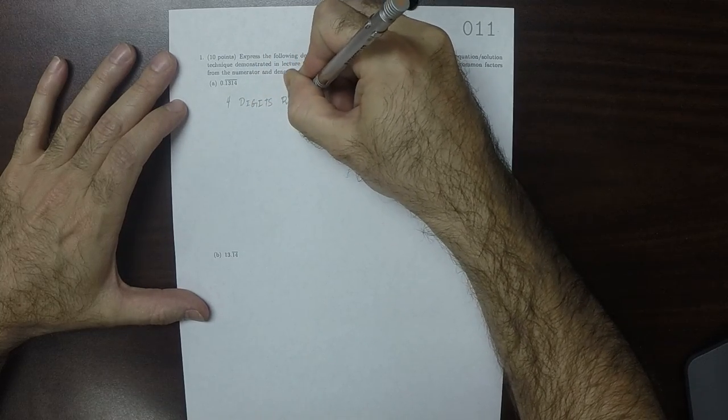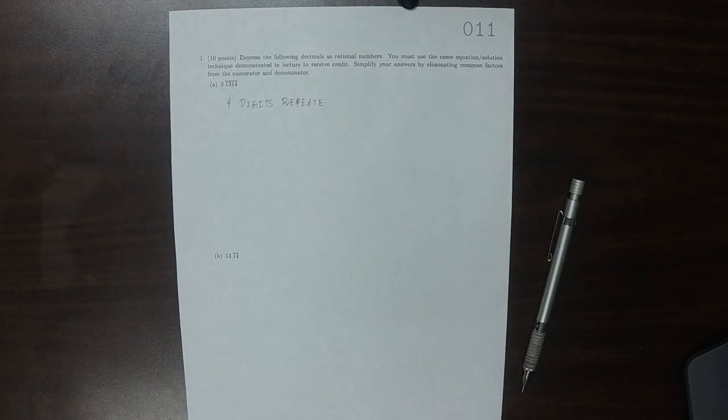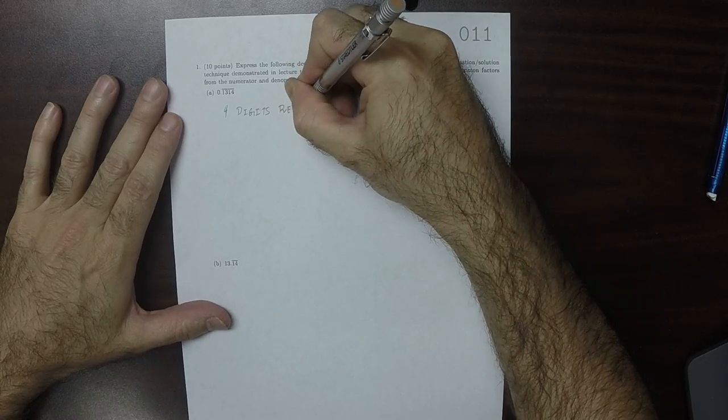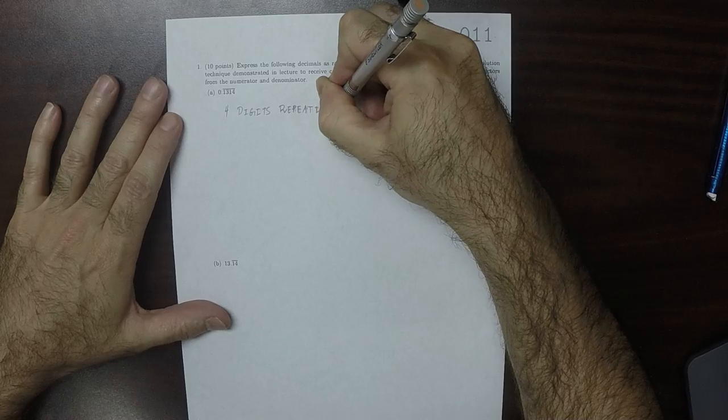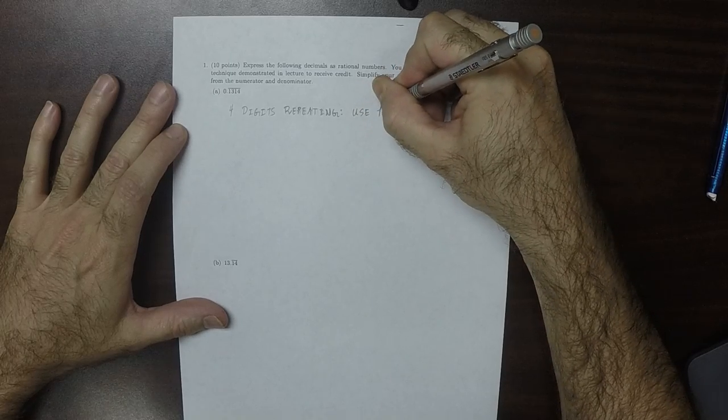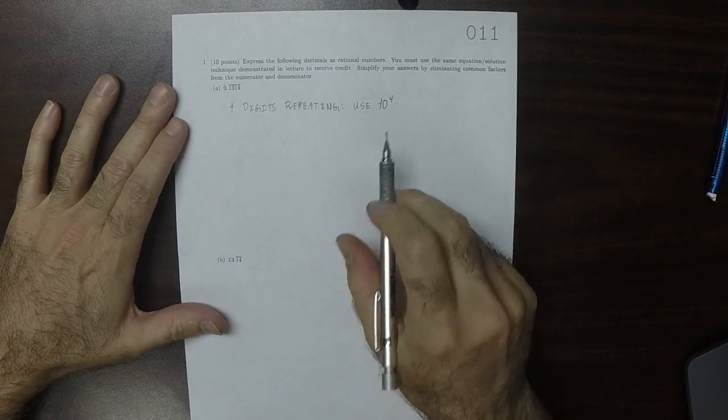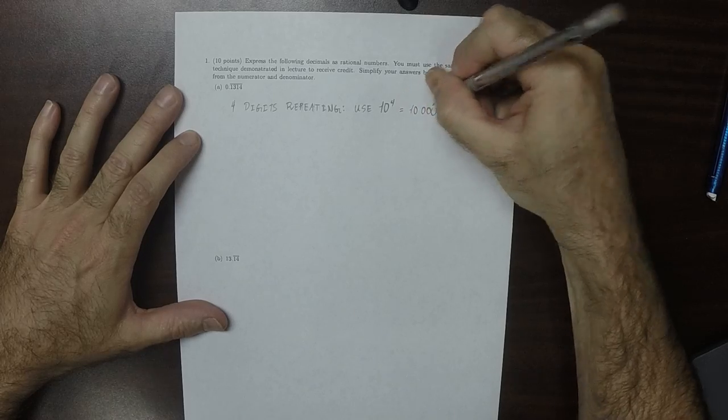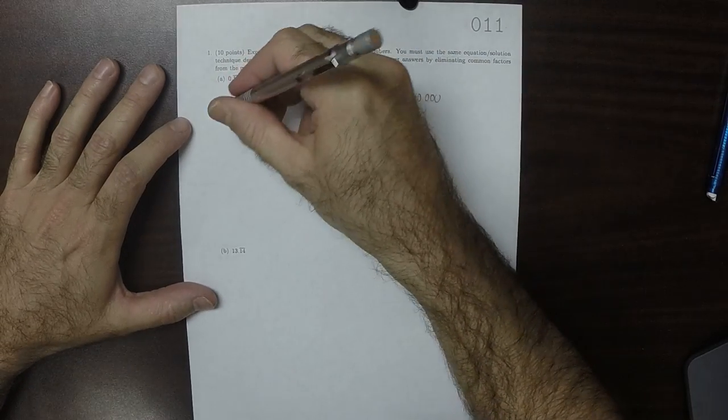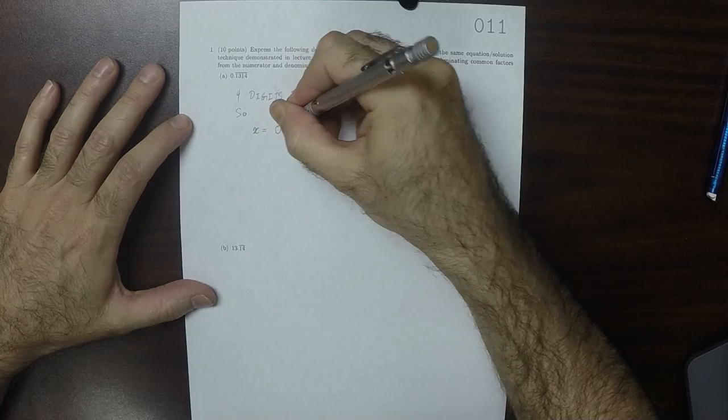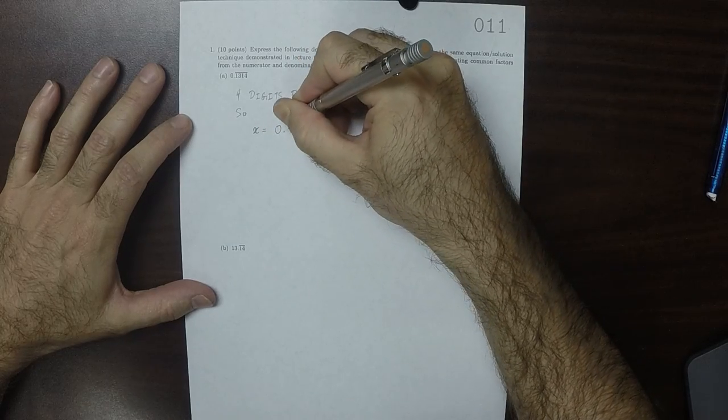Part A. So as a result, we'll use 10 to the exponent 4, which is 10,000. So if we call x this number, 0.1314 repeating.